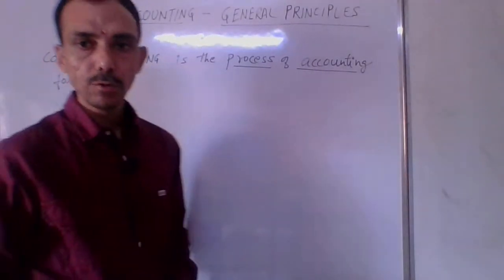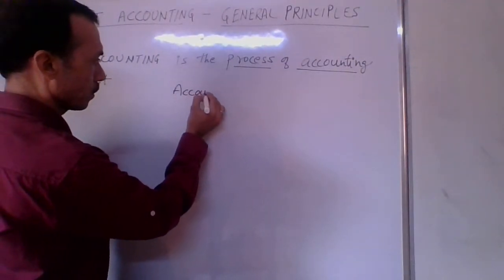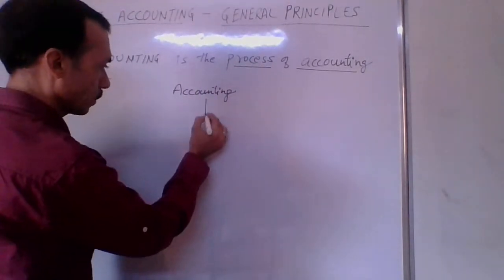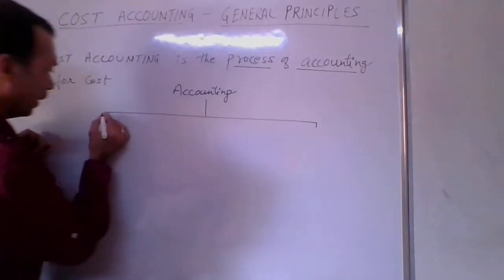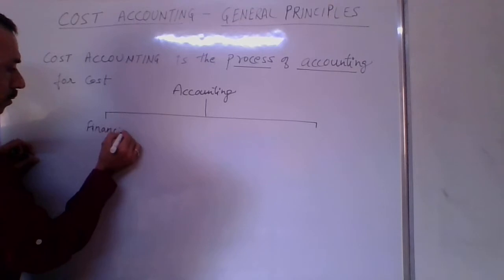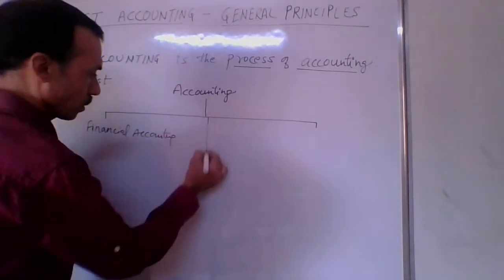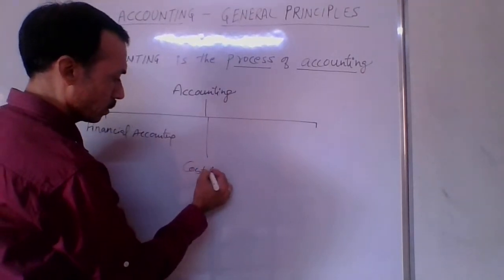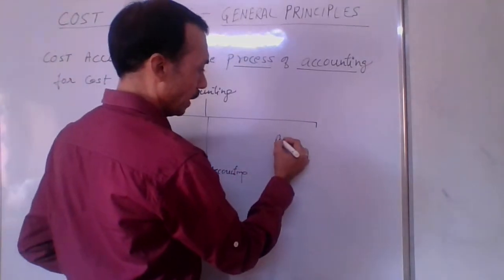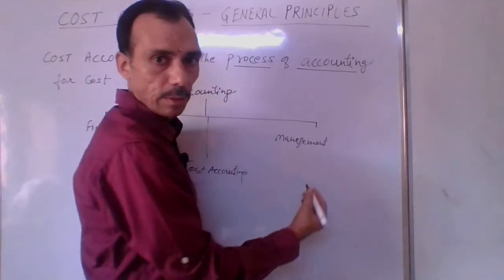Basically, accounting is divided into three parts: financial accounting, cost accounting, and management accounting.